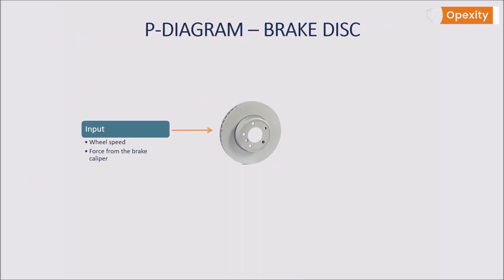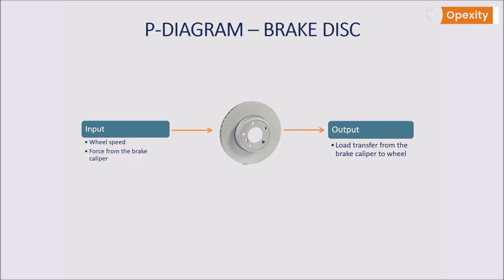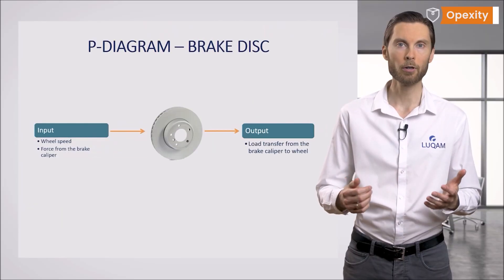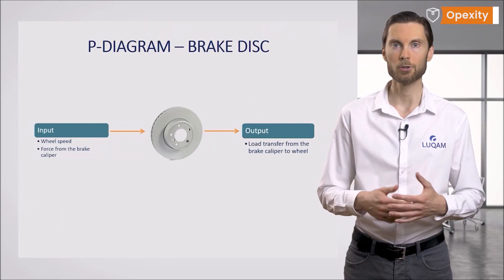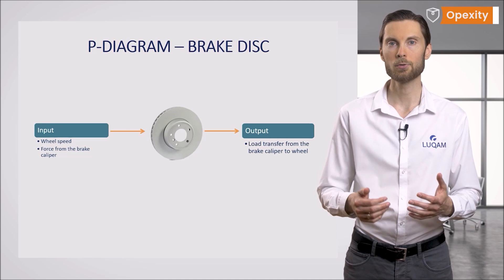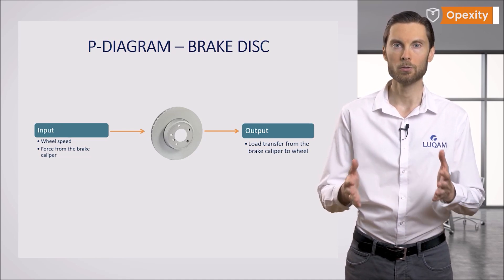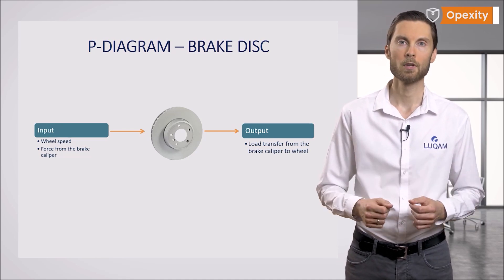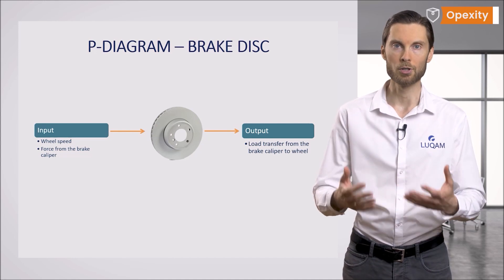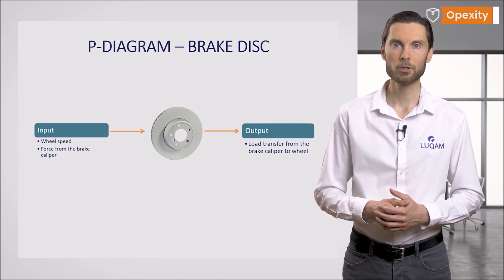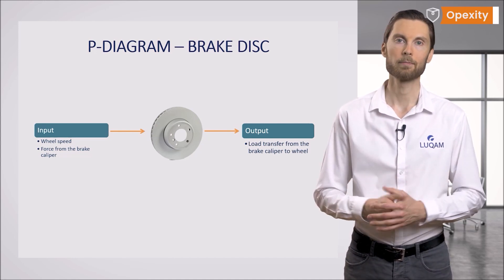Inputs and outputs describe the flow of energy through our object and allow us to understand the interactions that occur in the system in which our part is to function. The main function of the brake system, of which the brake disc is a part, is to transfer the force from the brake caliper to the wheel in order to reduce the speed of the wheel, causing the vehicle to stop.